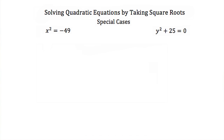Now let's talk about some special cases we run into when we take square roots. Here we have x squared is equal to negative 49. Normally I would square root both sides, ending up with the absolute value of x equal to the square root of negative 49. The problem is you cannot take the square root of a negative number, so there is no real solution to x squared equals negative 49.